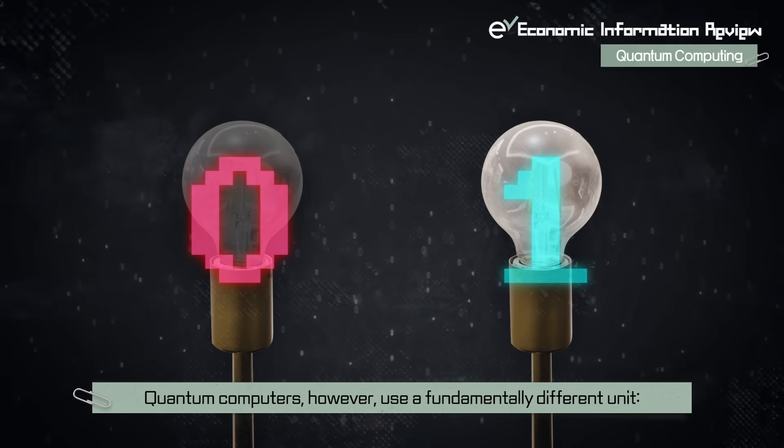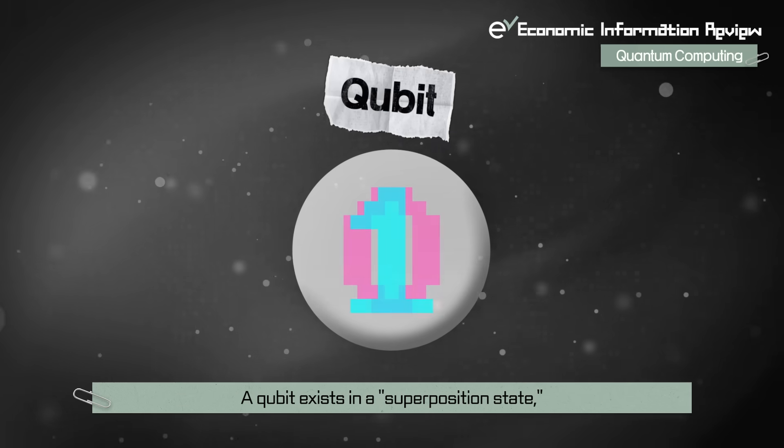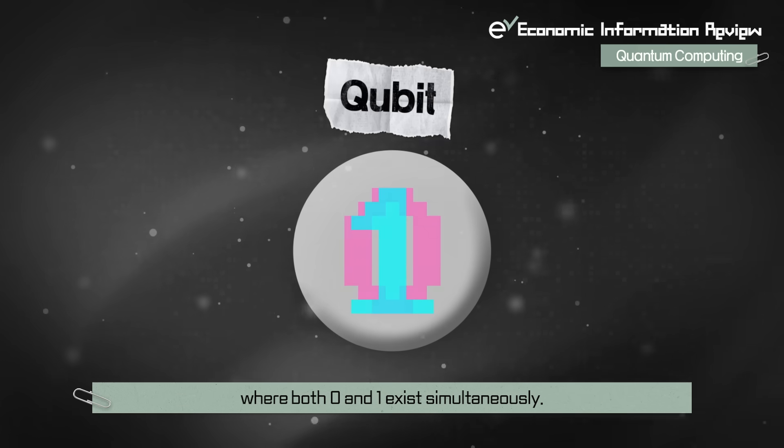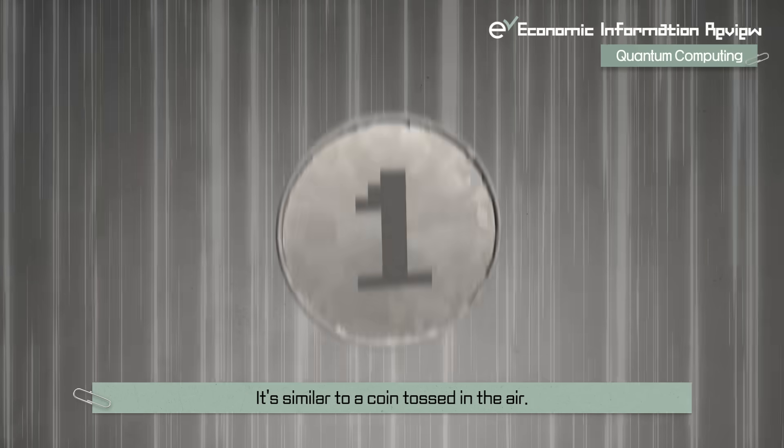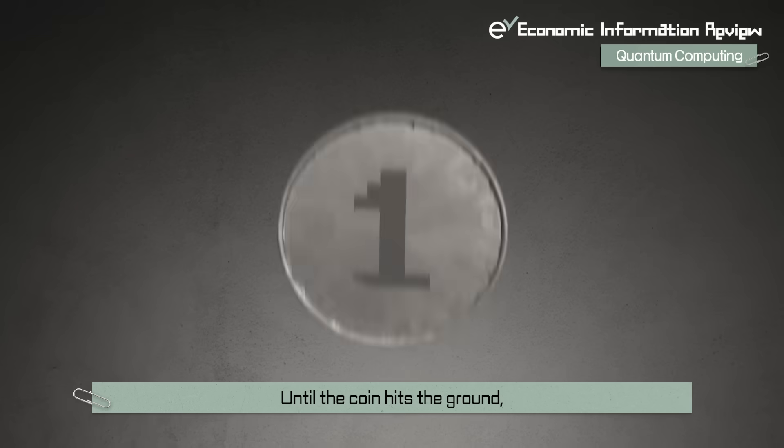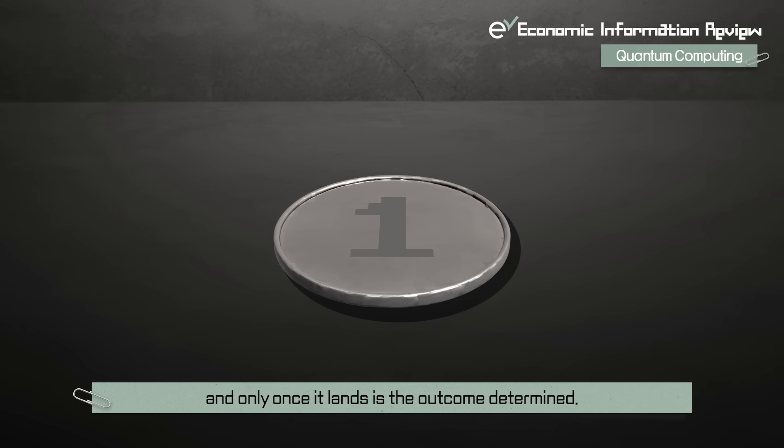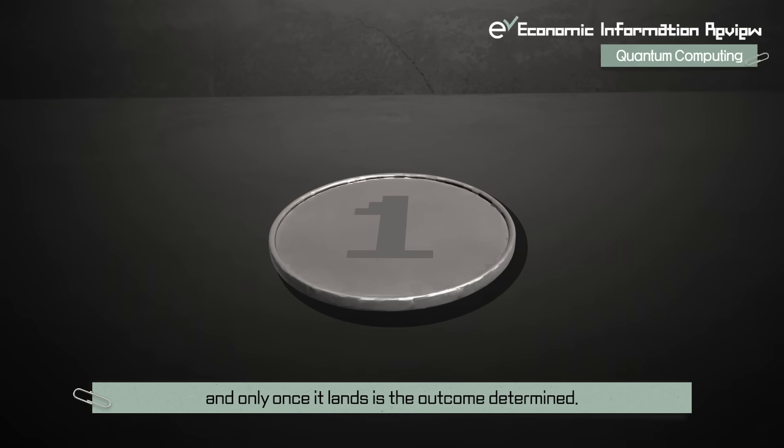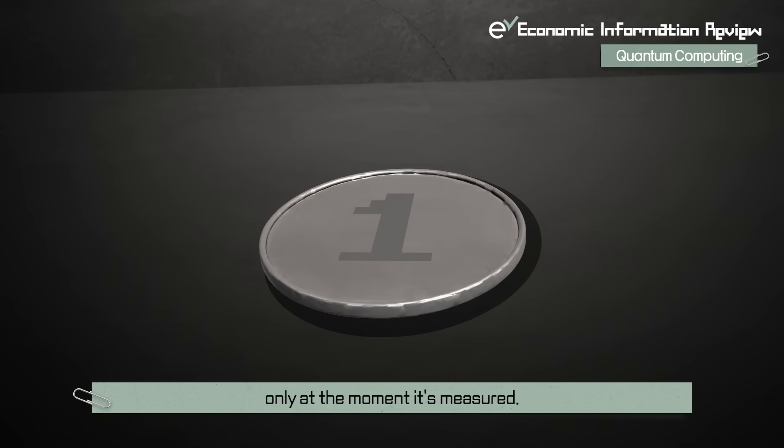Quantum computers, however, use a fundamentally different unit, a qubit. A qubit exists in a superposition state, where both 0 and 1 exist simultaneously. It's similar to a coin tossed in the air. Until the coin hits the ground, you can't know whether it will land on heads or tails, and only once it lands is the outcome determined. Similarly, a qubit is determined to be either 0 or 1 only at the moment it's measured.